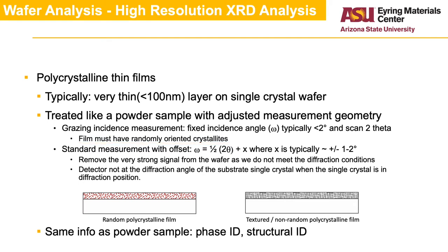For thicker thin films and films with texture, one would typically do a measurement similar to the one done on a powder, where the incidence angle varies as a function of detector angle. However, to avoid measuring the signal from the substrate, an offset is added, so the incidence angle is not half of the diffraction angle, which would typically bring the substrate into diffraction condition when the detector is at the angle where the wafer diffracts, producing a very strong peak and often some artifacts.